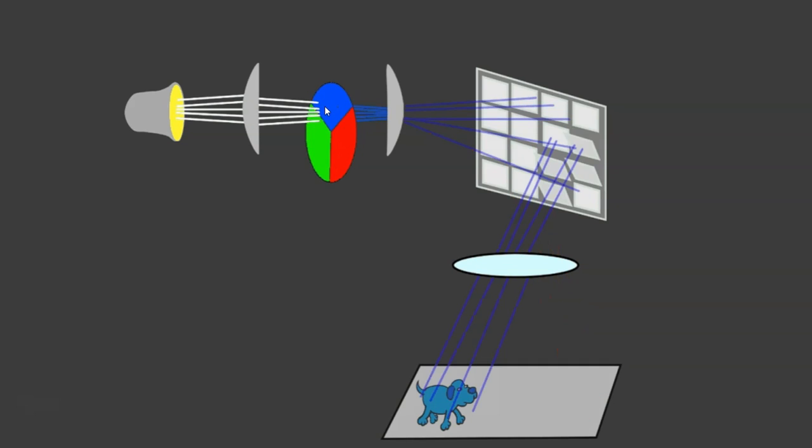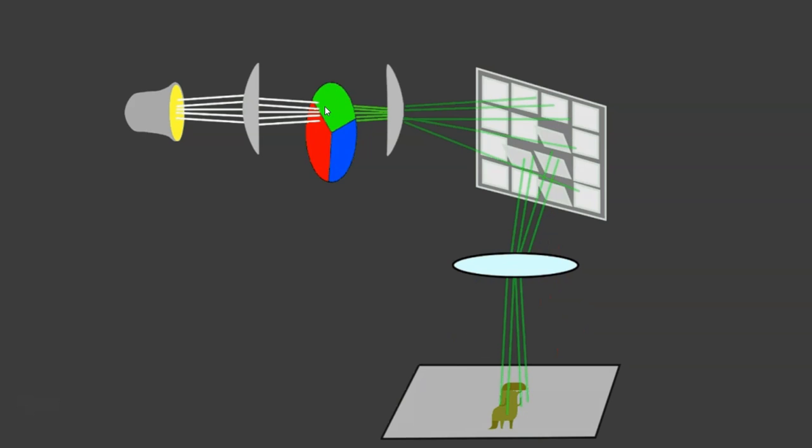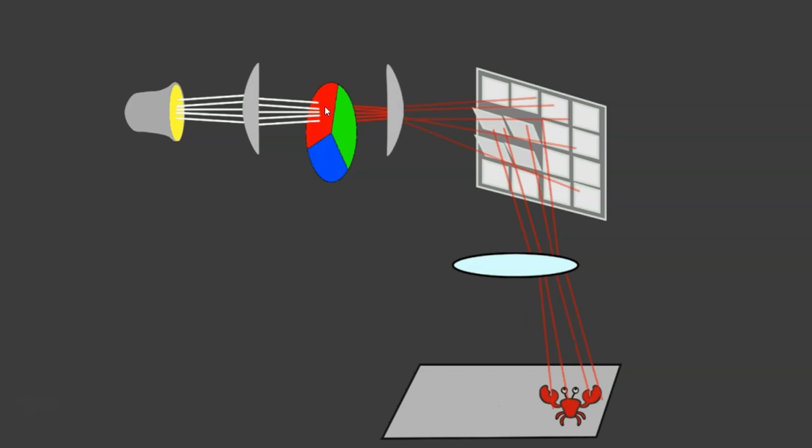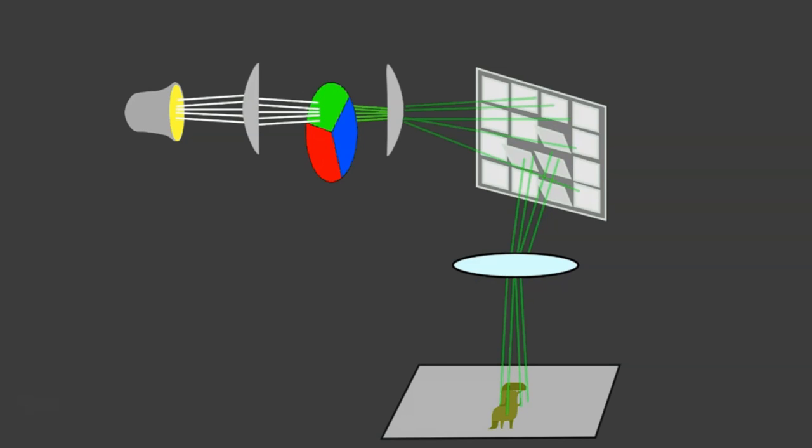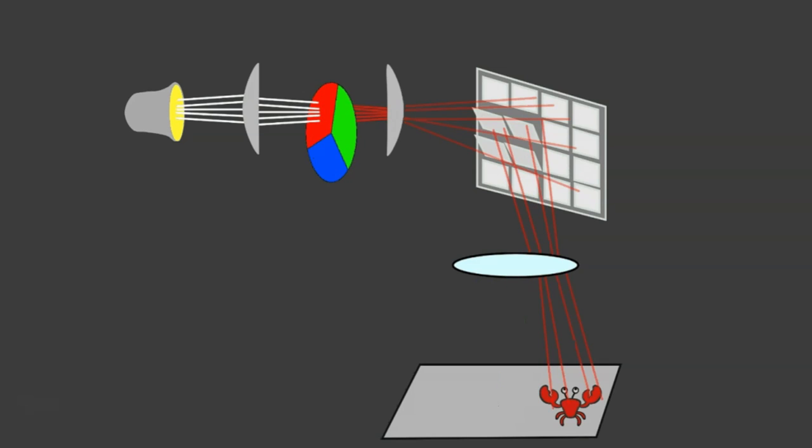Depending on where it's rotating at that time, you'll either pass through red or green or blue light, which then goes through the next lens which directs it onto the micromirror device. As you can see here with the micromirror, depending on which ones of the mirrors have been activated or tilted...